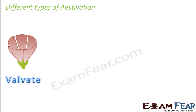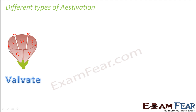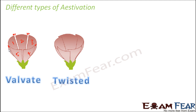In valvate aestivation, petal one and petal two just touch at the margin. The second and third touch at the margin, the third and fourth, and the fourth and fifth — all of them touch each other only at the margin. That is valvate aestivation.